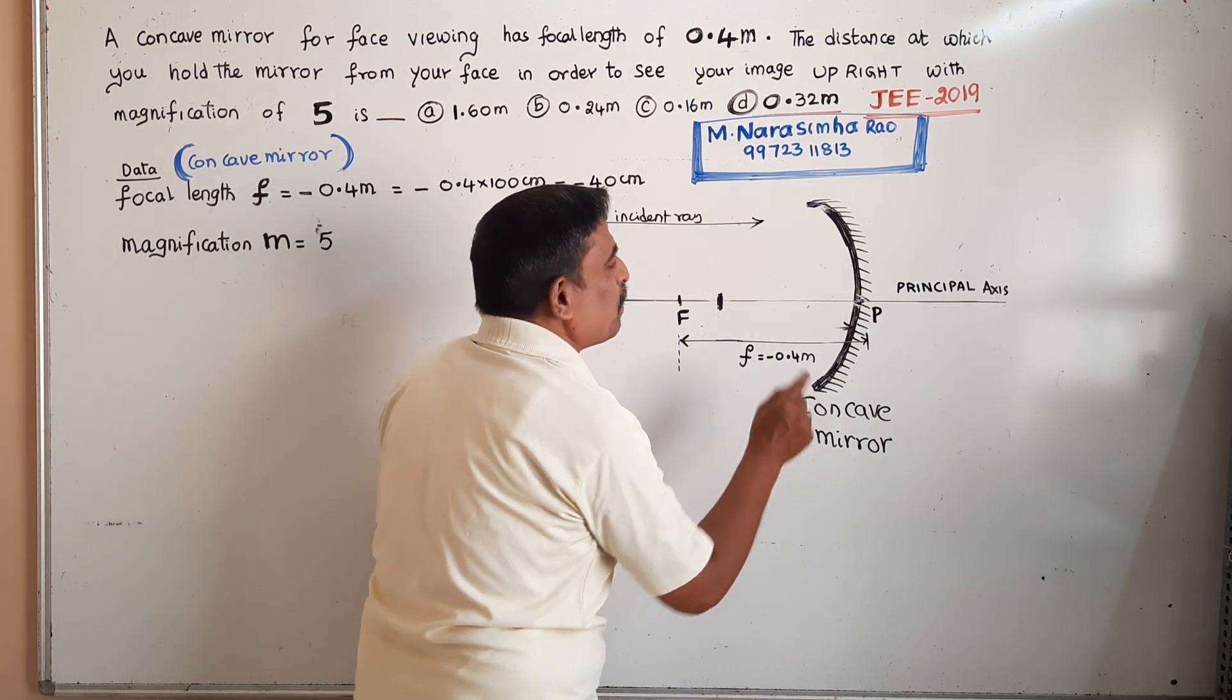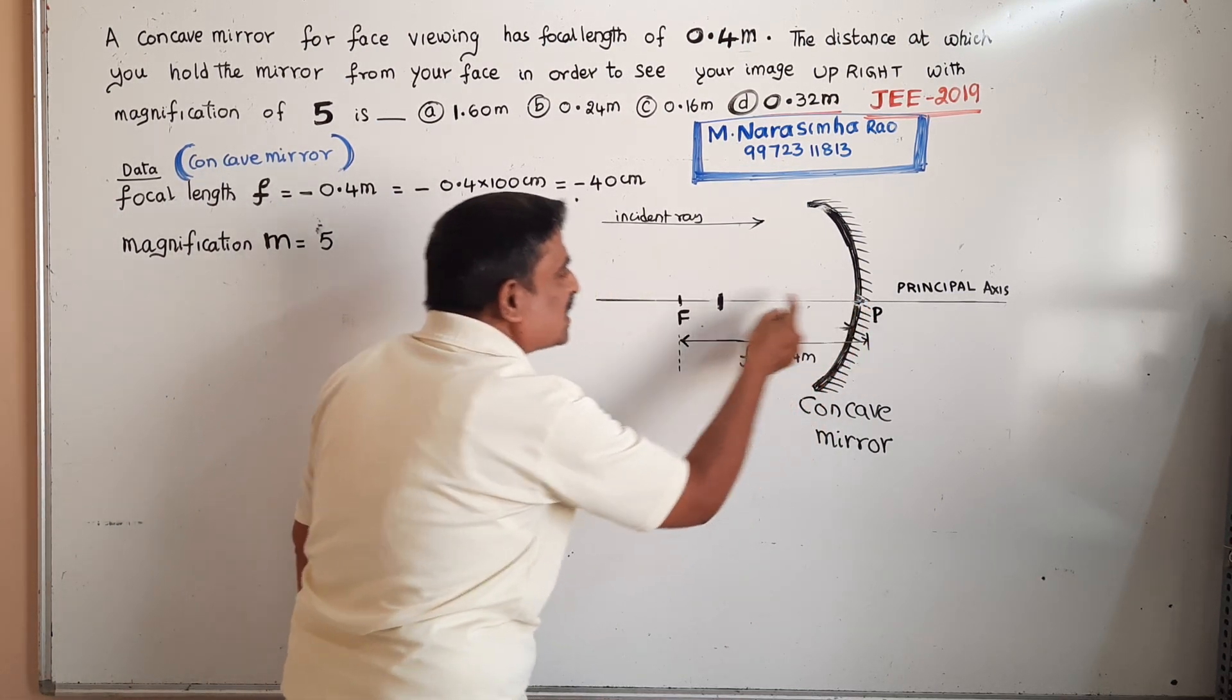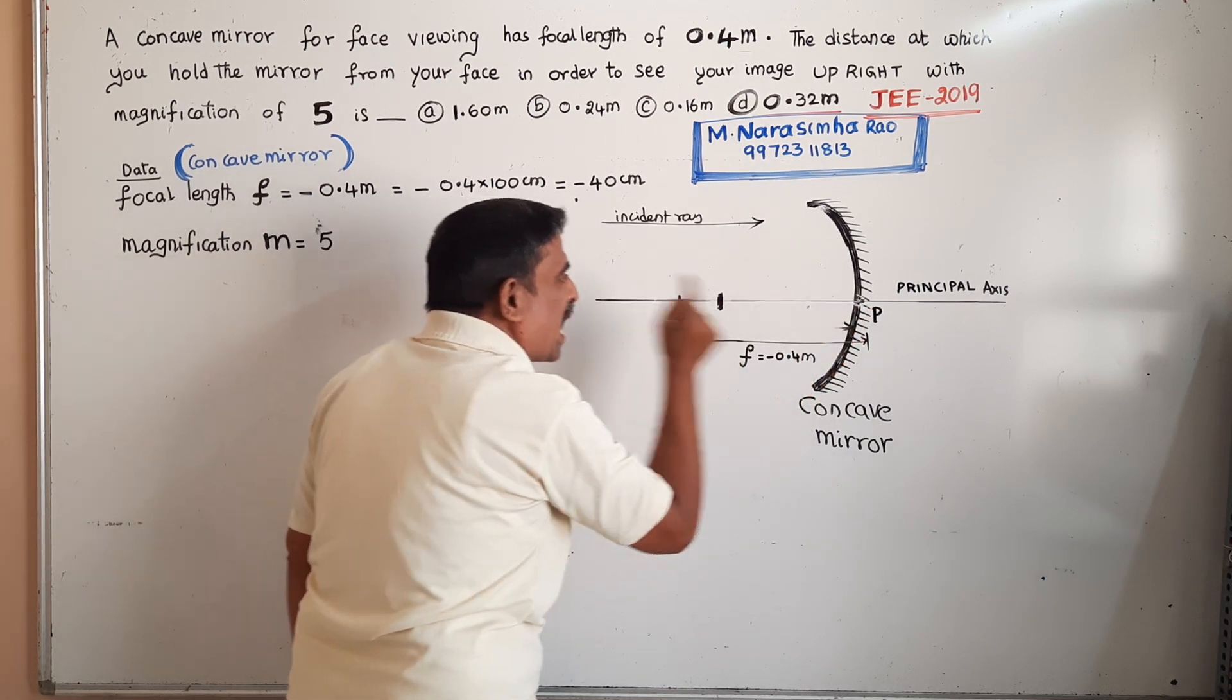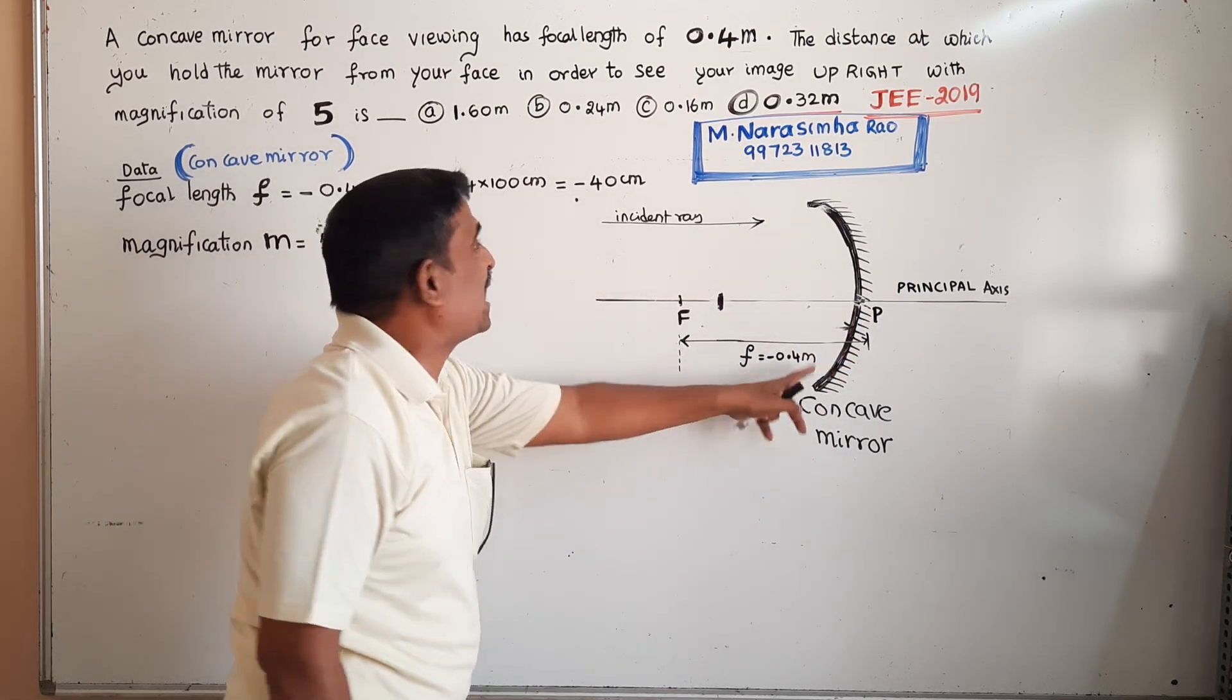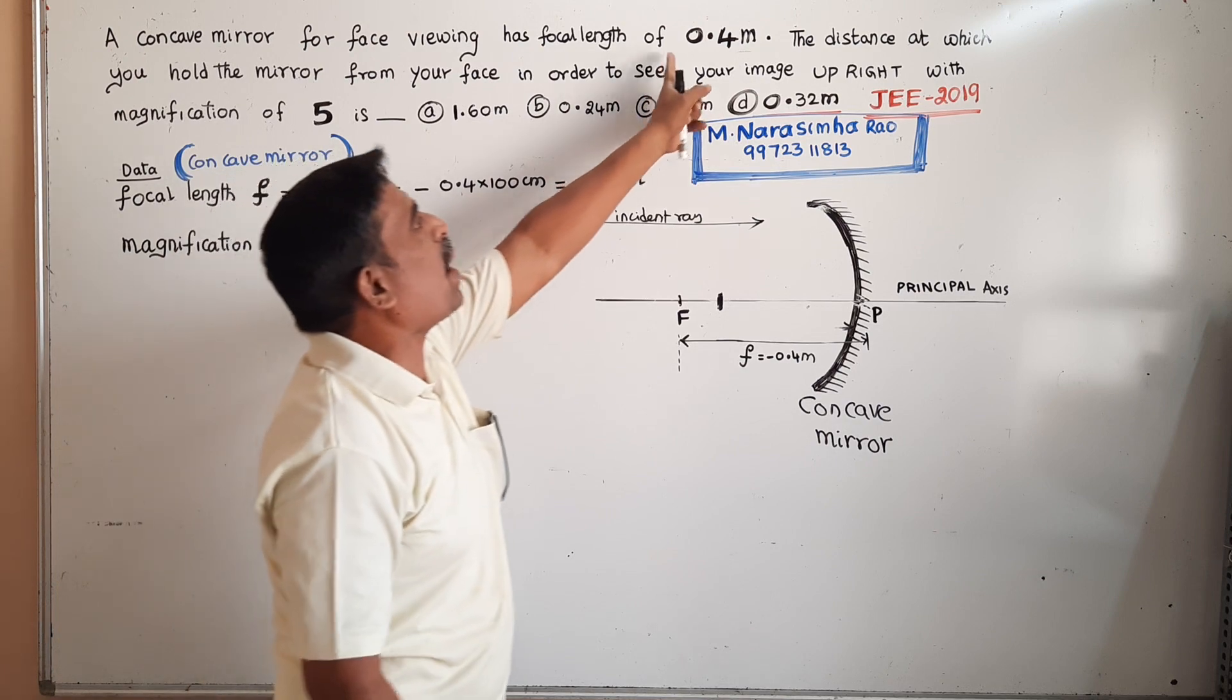The distance between the pole and the principal focus is called the focal length. The focal length is given as 0.4 meters.